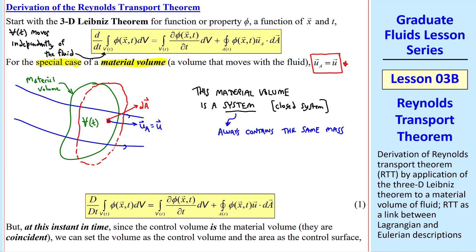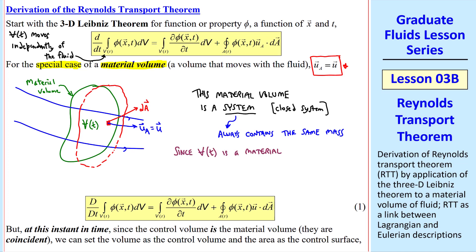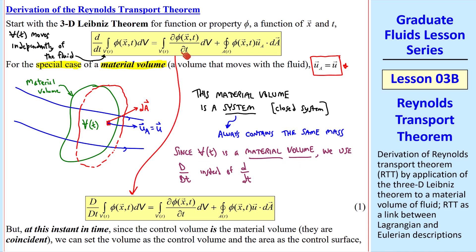Mass cannot escape or come into a system. And since our V of t is now a material volume, we use the notation capital D/Dt instead of d/dt, as we did when we derived the material derivative in a previous lesson. This notation emphasizes that V is a material volume. For this special case, then, we rewrite this equation as this equation. You see that everything's identical except the capital D's.